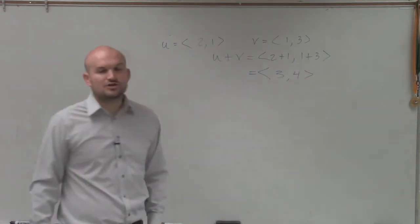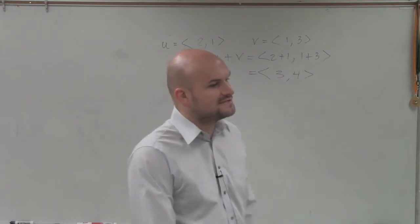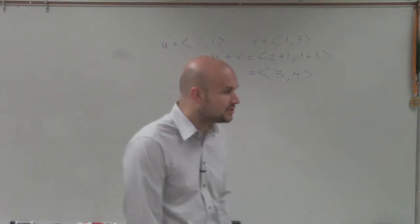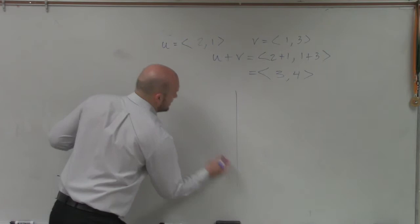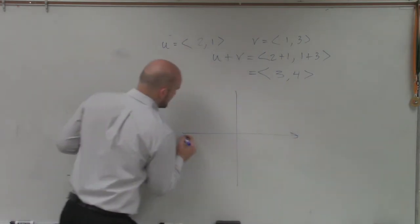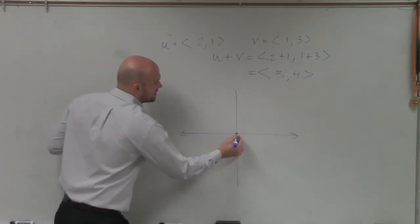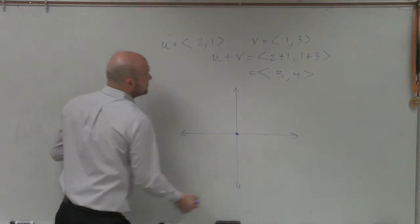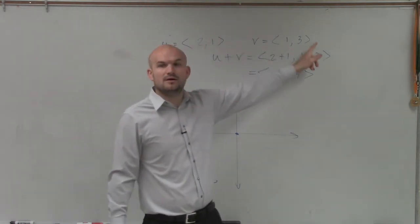But we also want to be able to show what these look like on a graph. So remember, these are in component form. Therefore, component form has an initial point at (0,0), and then these are going to be your endpoints, or terminal point.